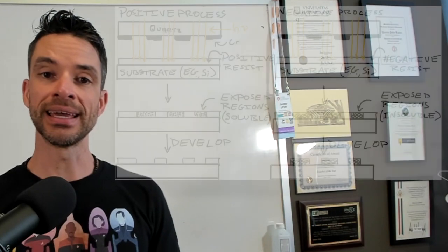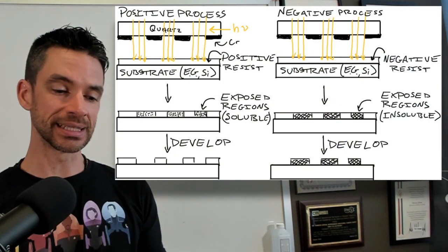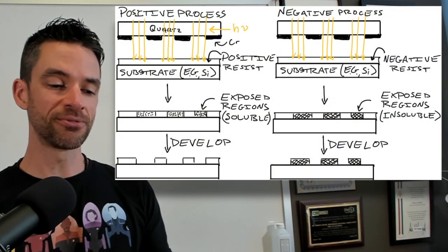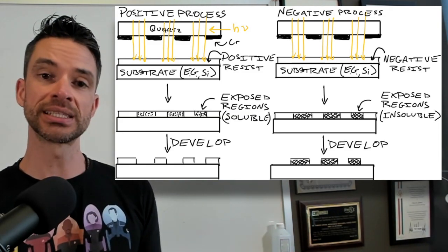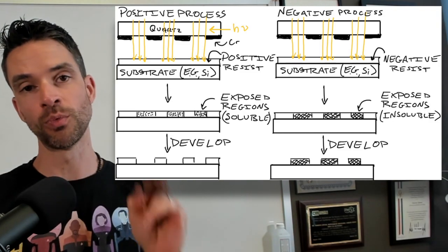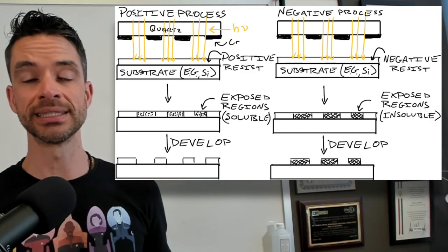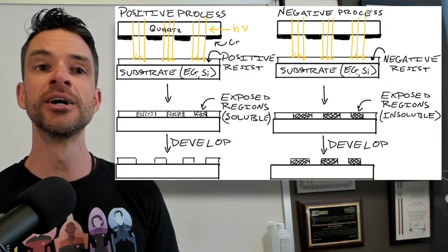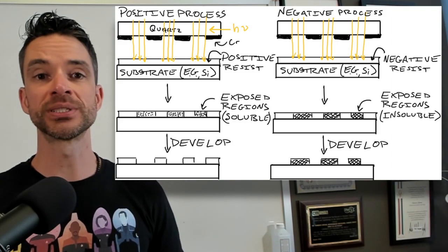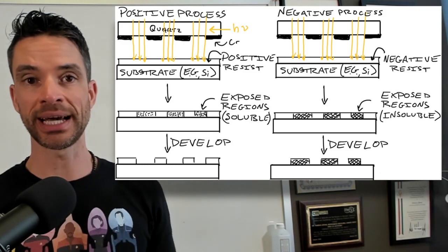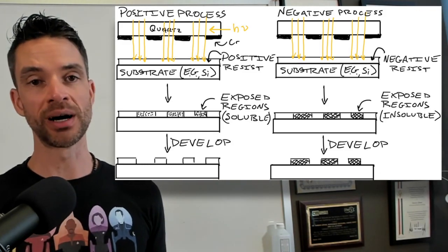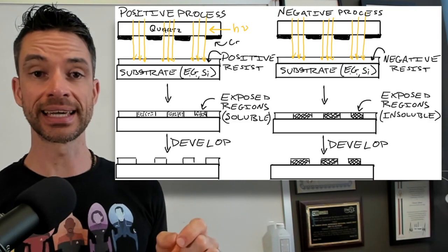So a photoresist, that is the polymer film into which you project nanoscale images on a silicon wafer, can be of one of two types. One is a positive photoresist, where the apertures in the mask, that is the openings in the mask, allow light to pass through to impinge upon this layer in the silicon.